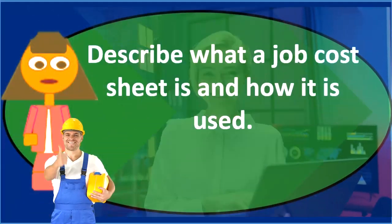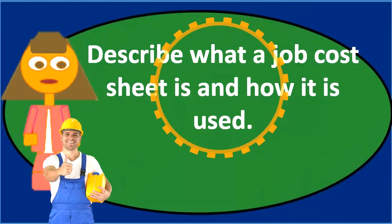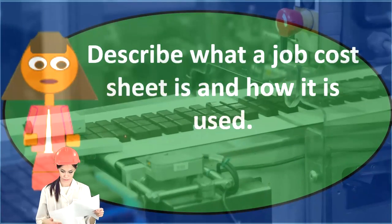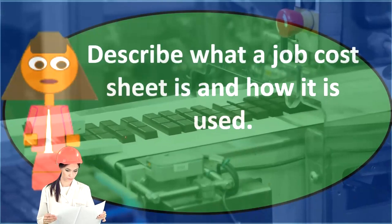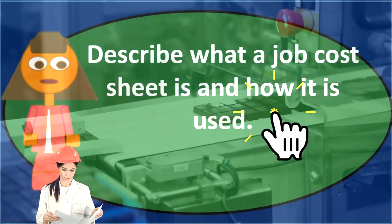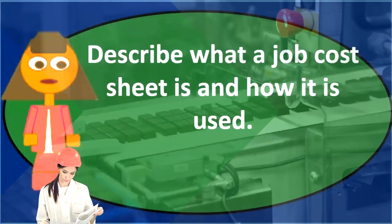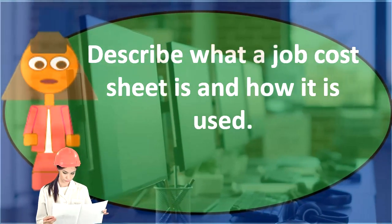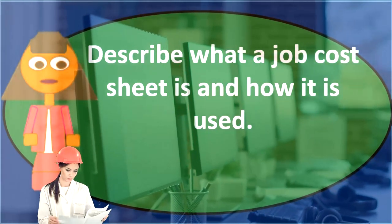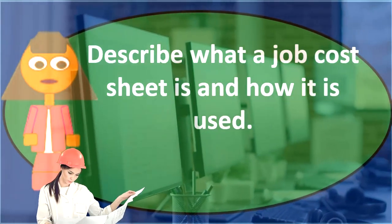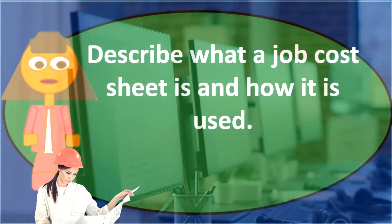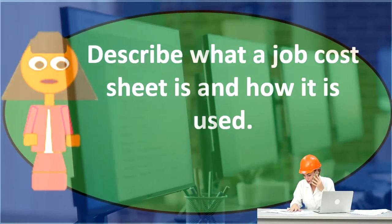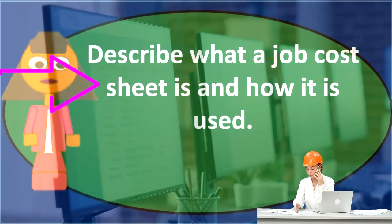So a job cost system is typically one of two systems that's going to be used for production processes, although it could also be used for service companies as well. Usually in cases where we're going to have some type of customization, where the things that we're producing, the jobs we're working on will be different. And therefore we need to track costs between the inventory or the jobs in a separate way, so that we can track those costs that will differ from job to job, because those jobs are going to be different in nature. There's going to be some type of customization typically.